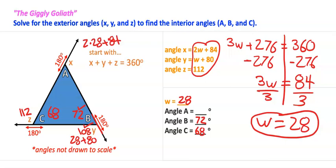I don't have that calculated. Let me do that really quick. 2 times 28 plus 84 is 140 degrees. So the exterior angle is 140 degrees, which means the interior angle has to be 40. So angle A has got to be 40 degrees.